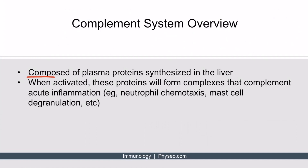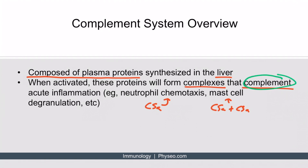The complement system is composed of plasma proteins that are synthesized in the liver, and when activated, these proteins will form complexes that will complement acute inflammation. For example, C5A will upregulate neutrophil chemotaxis. C5A and C3A will upregulate mast cell degranulation. I bring these up again here to reinforce the term complement — the complement system complements acute inflammation.